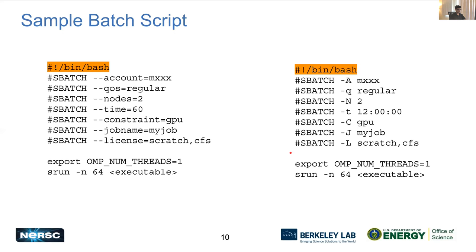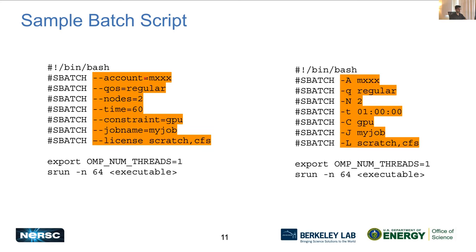Now, how to launch a job. This is how a batch script looks. The one on the right and left are equivalent — just different ways of writing the same thing. The very first line specifies the shell type; here we use bash. After that, we have job configuration options. For example, --account specifies the account you want the job charged to. On the right, the short format is -A. It's better to use the more verbose long format to keep things clear.